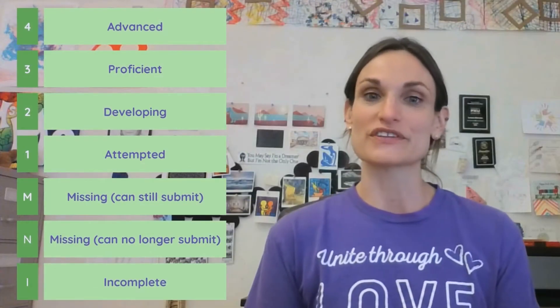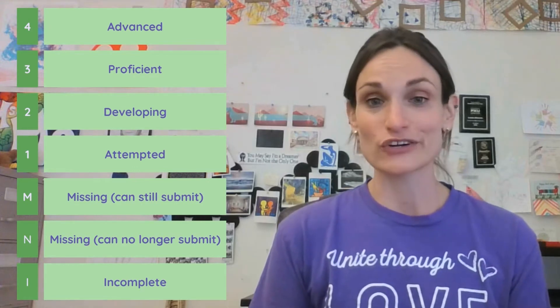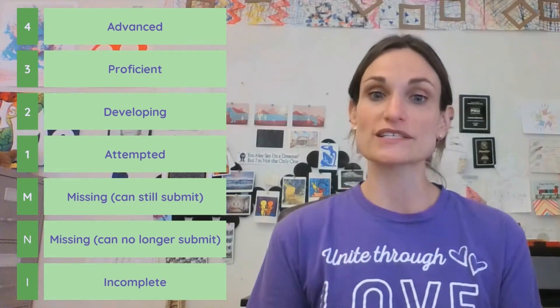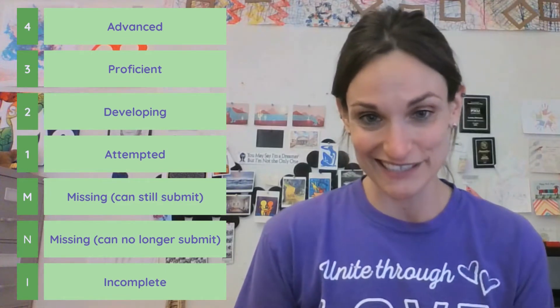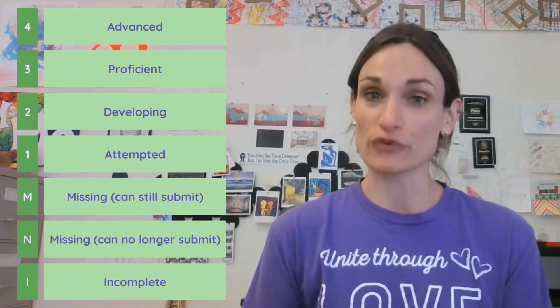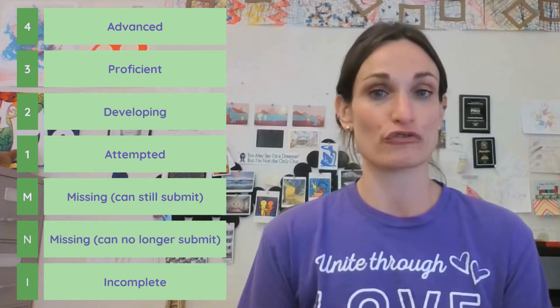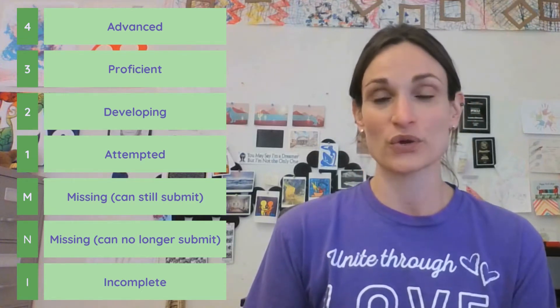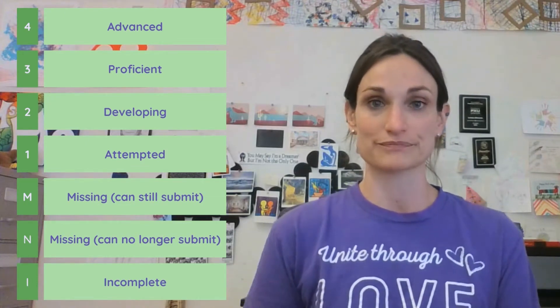The rubric refers to the entire document provided to the student for an assessment. The scaled learning target refers to the proficiency level students can perform at on an assessed skill. That ranges from 1 to 4 and translates to attempted, developing, proficient, and advanced. We also use the marks shown to communicate missing and incomplete work. The success criteria provides a clear list of ways students can demonstrate their proficiency level.